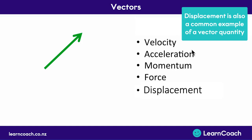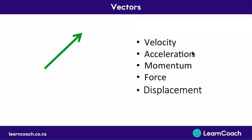If we were talking about something like weight, for example, weight can't have a direction. You can't say I have a mass of 50 kg to the north — it just doesn't make any sense. So we're going to look at how we use vectors when talking about these vector quantities.